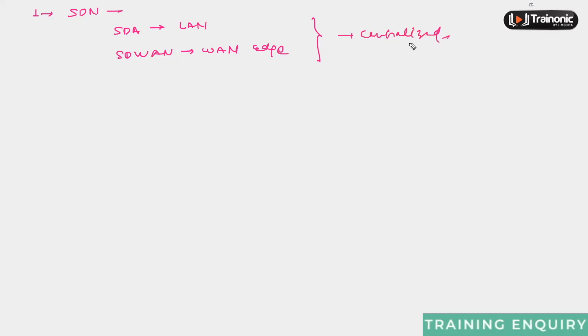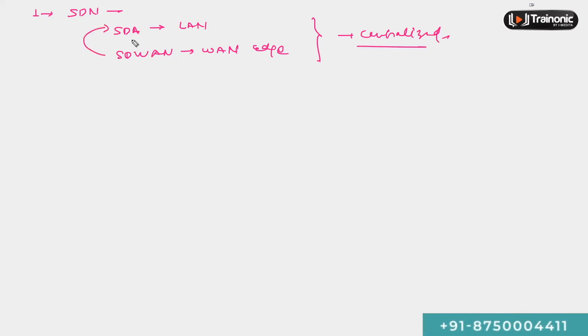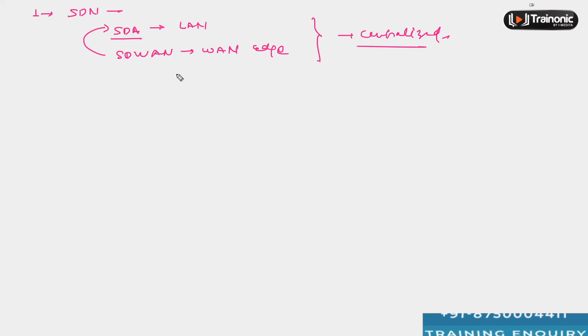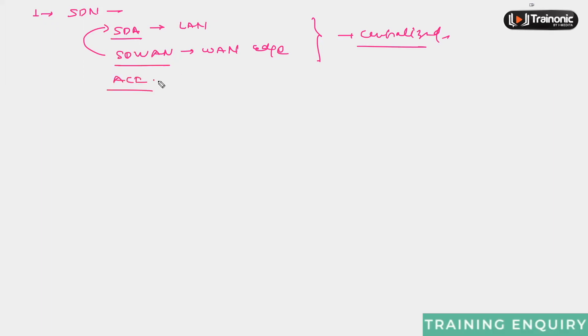Nowadays, SD-WAN can be integrated with the SDA solution so that you get a centralized view and from there you can manage all the rest of the things. As far as the data center network is concerned, ACI is already there for the data center environment.